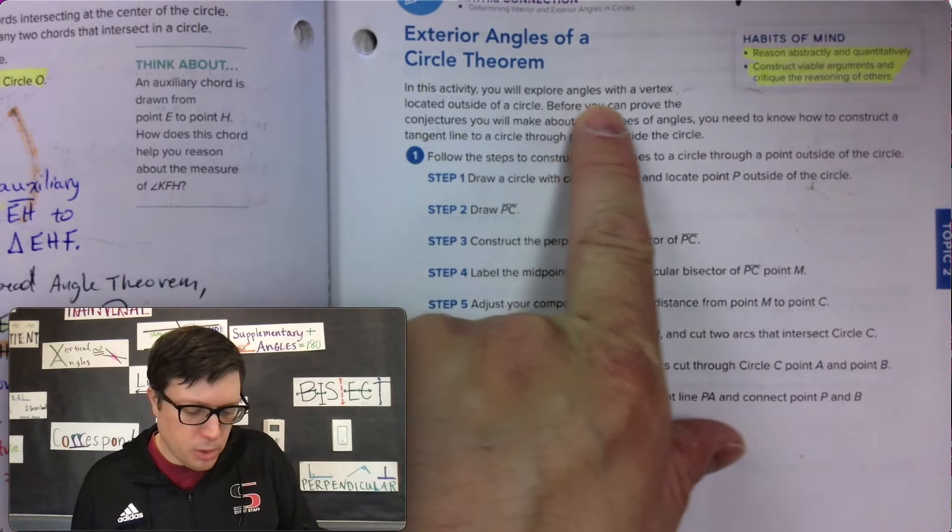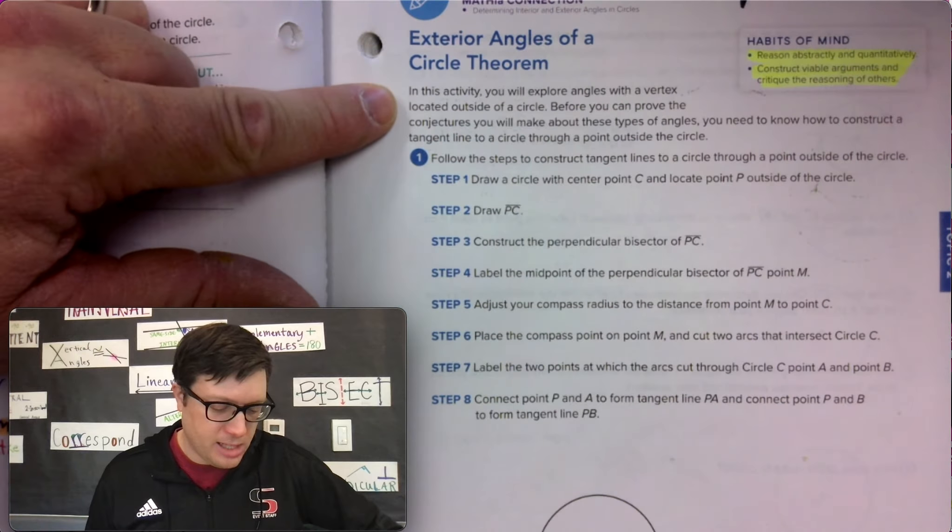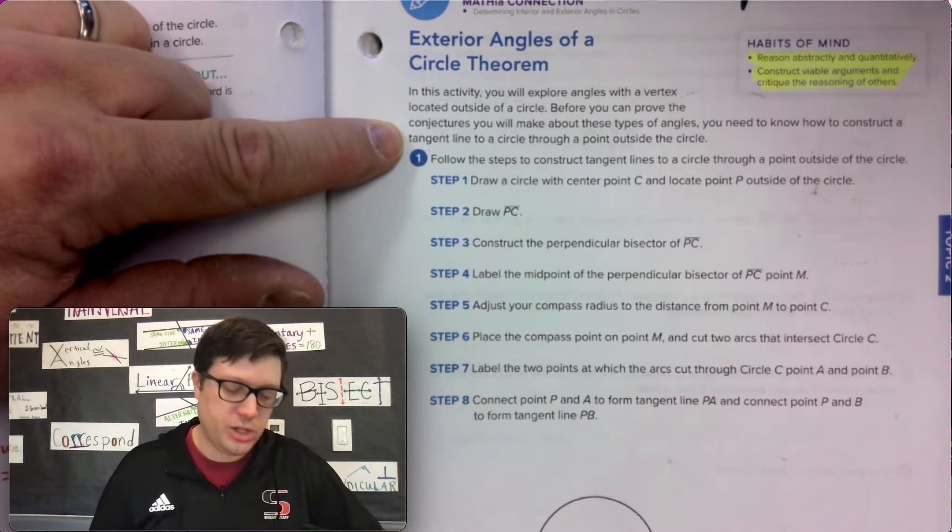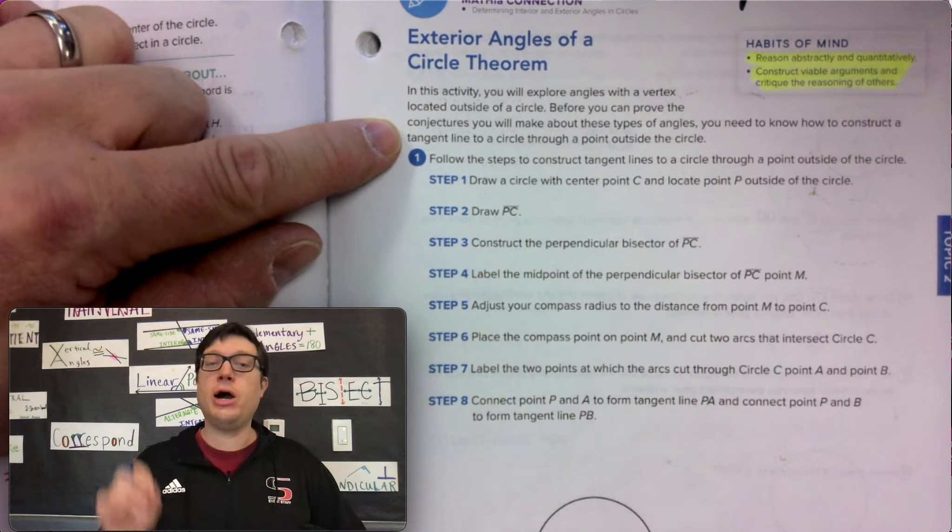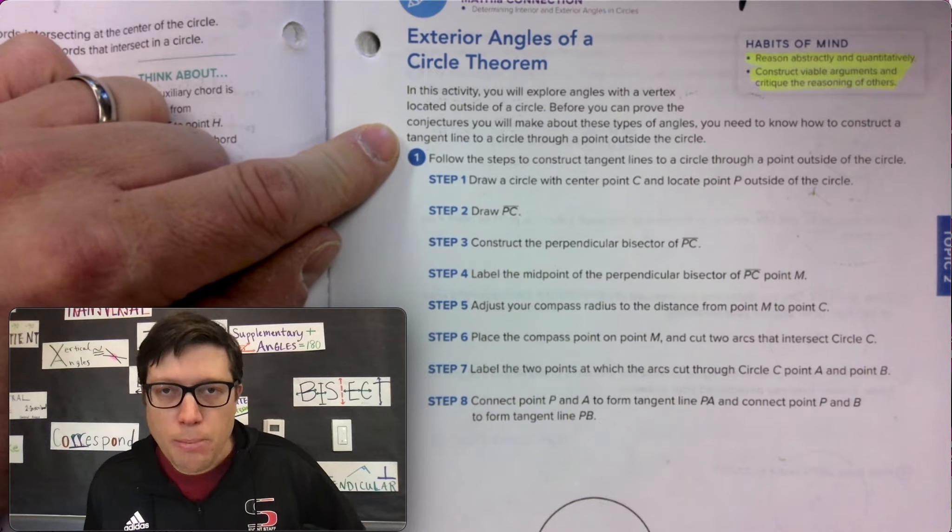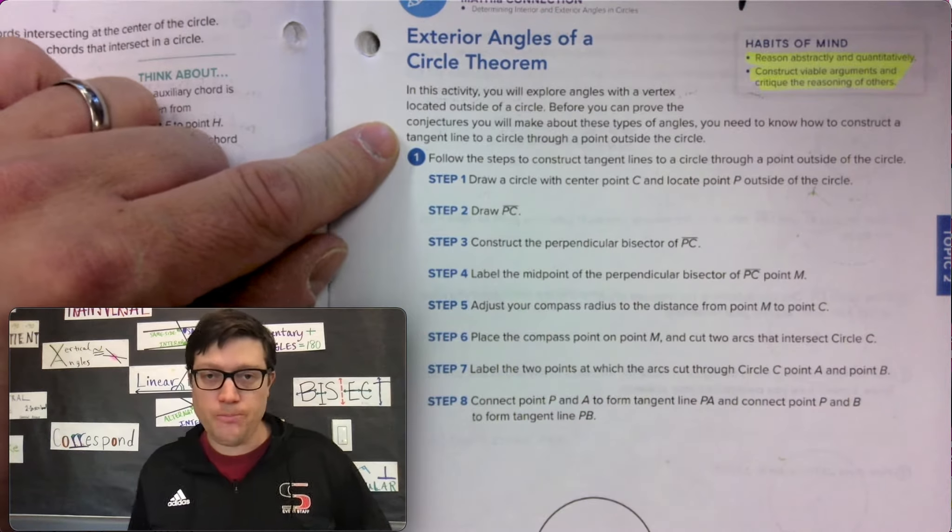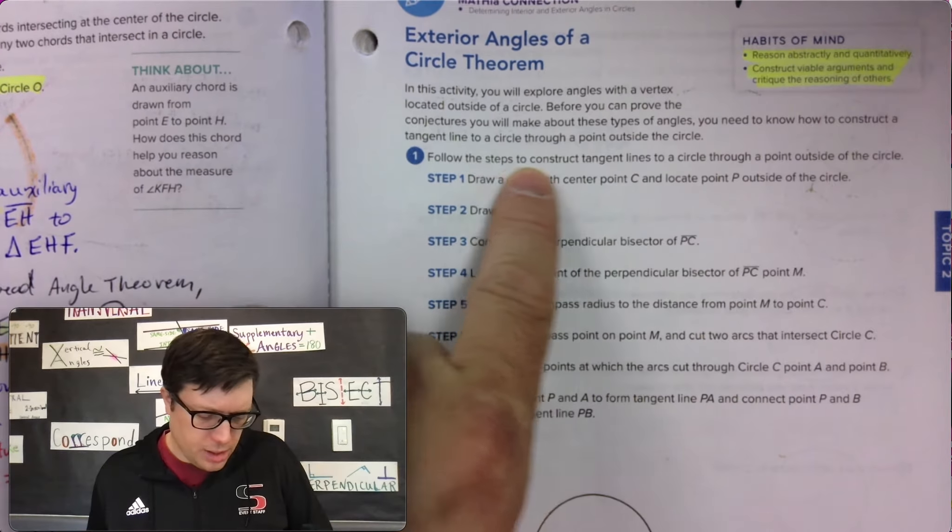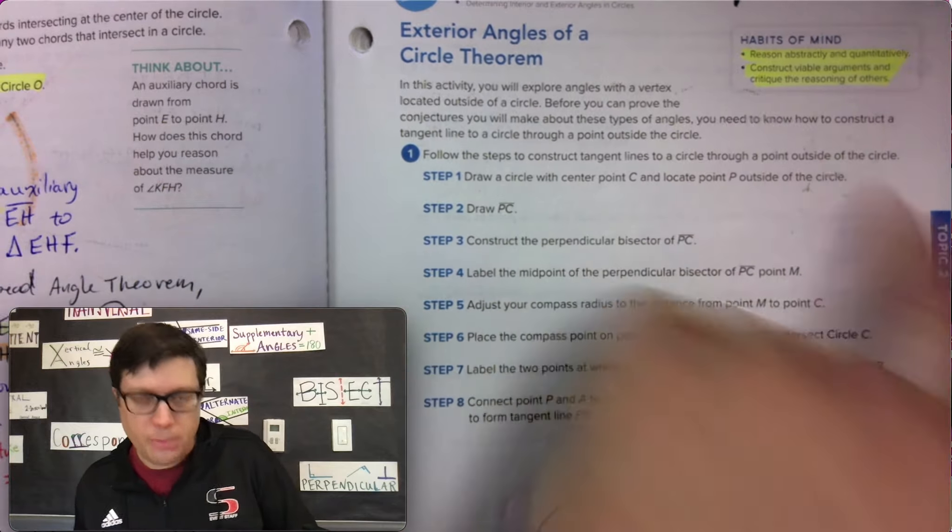In this activity, you will explore angles with a vertex located outside of a circle. Before you can prove the conjectures about these types of angles, you need to know how to construct a tangent line to a circle through a point outside the circle. Follow the steps to construct tangent lines to a circle through the point outside the circle.